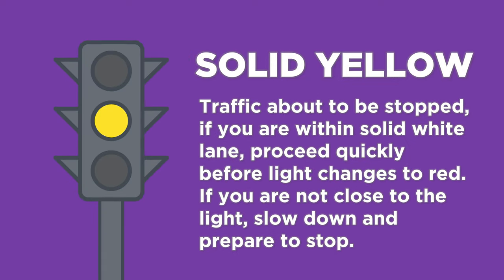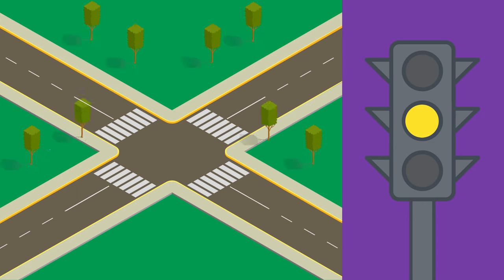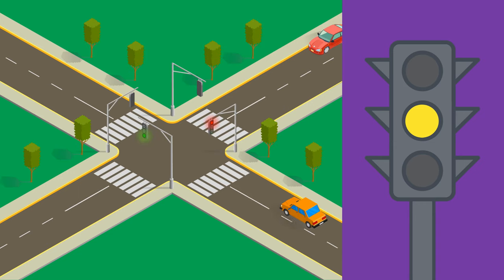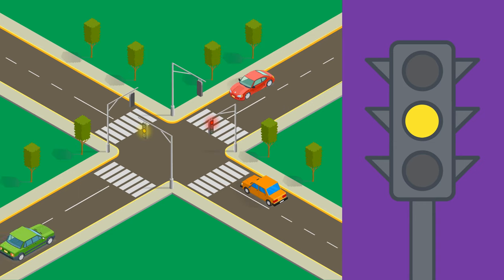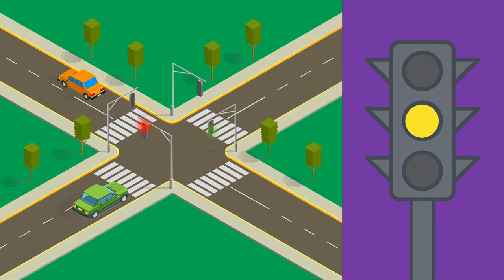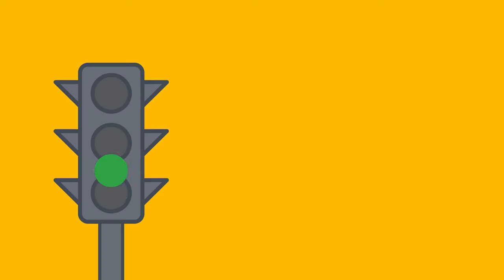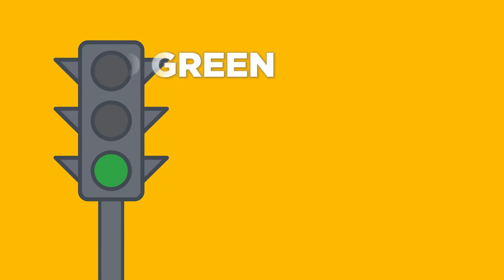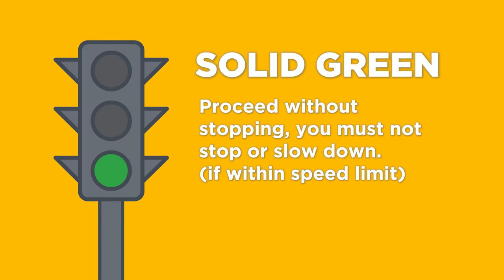Solid yellow light: traffic is about to be stopped. If you are within the intersection and cannot change lanes, proceed quickly before the light changes to red. If you are not close to the light, slow down and prepare to stop your vehicle.